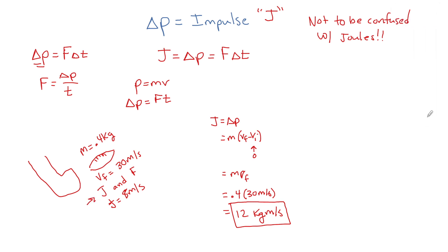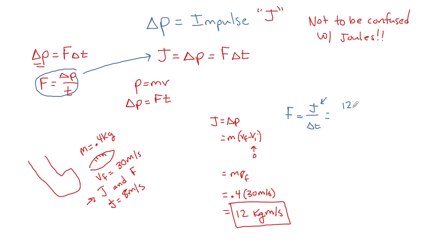For the second part, the average force equals impulse over delta t. Since delta p is synonymous with J, F equals J over delta t. We have 12 kilogram meters per second divided by 8 times 10 to the minus third seconds, giving a force of 1500 newtons.